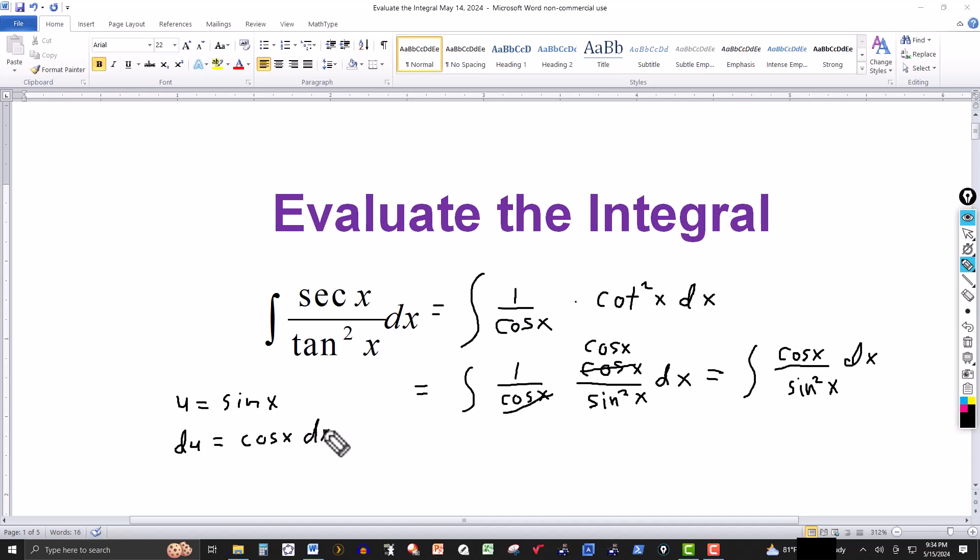And then I'm going to transform this integral into one involving the variable u. So notice, over here in the denominator, I have sine squared of x, but sine of x is equal to u, so I can replace the sine squared of x in the denominator by u squared.